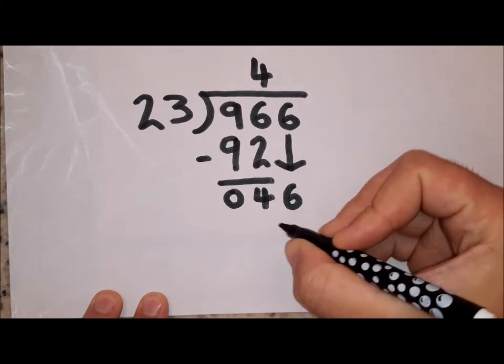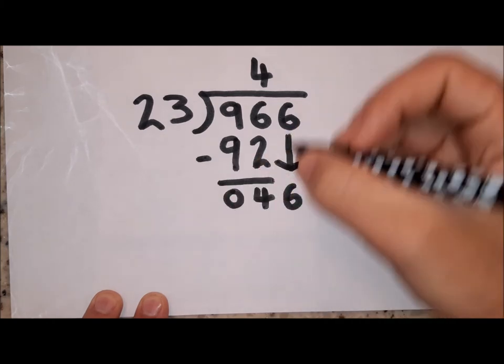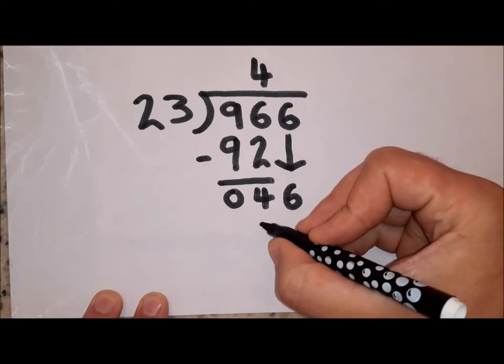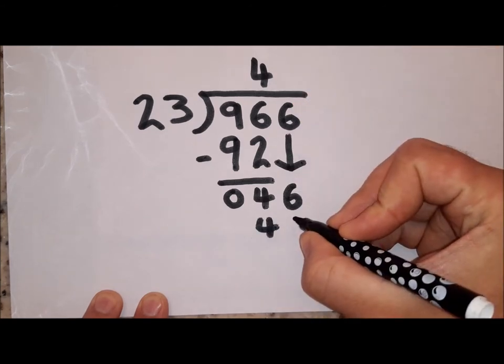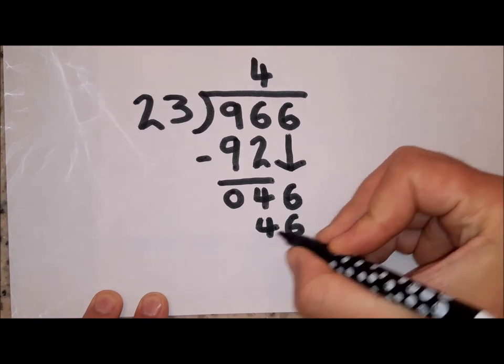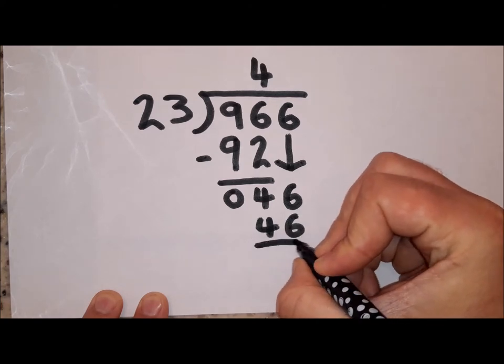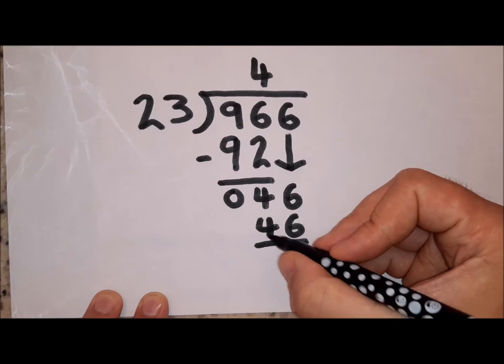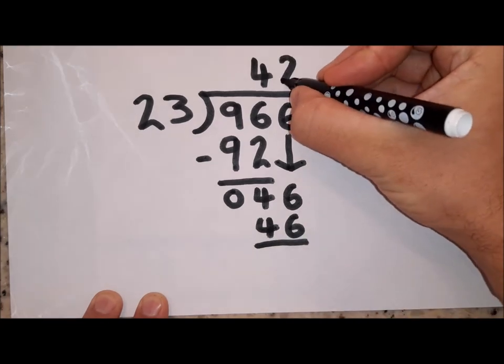And again I'm now going to go dividing. 46 divided by 23 is going to be 2, because 23 and 23 is 46. There's my 46. I'm going to put my 2 in at the top, which gives me 42.